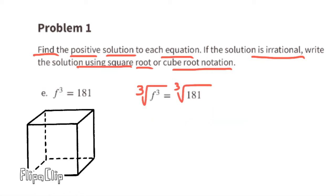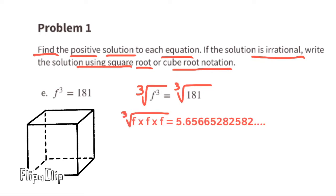Part e: f cubed equals 181. Since the cube root of 181 is irrational, then we can say that f equals the cube root of 181.